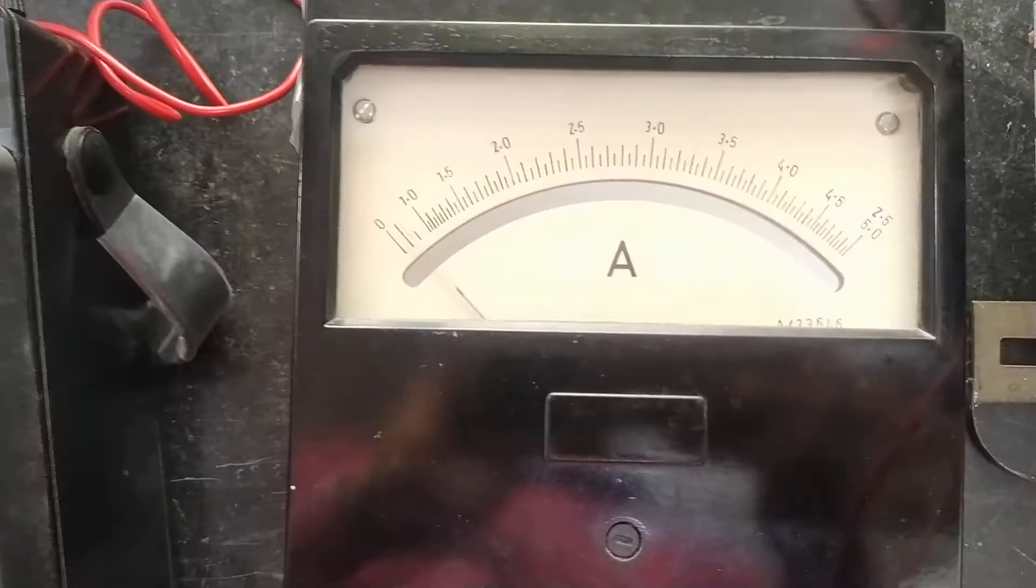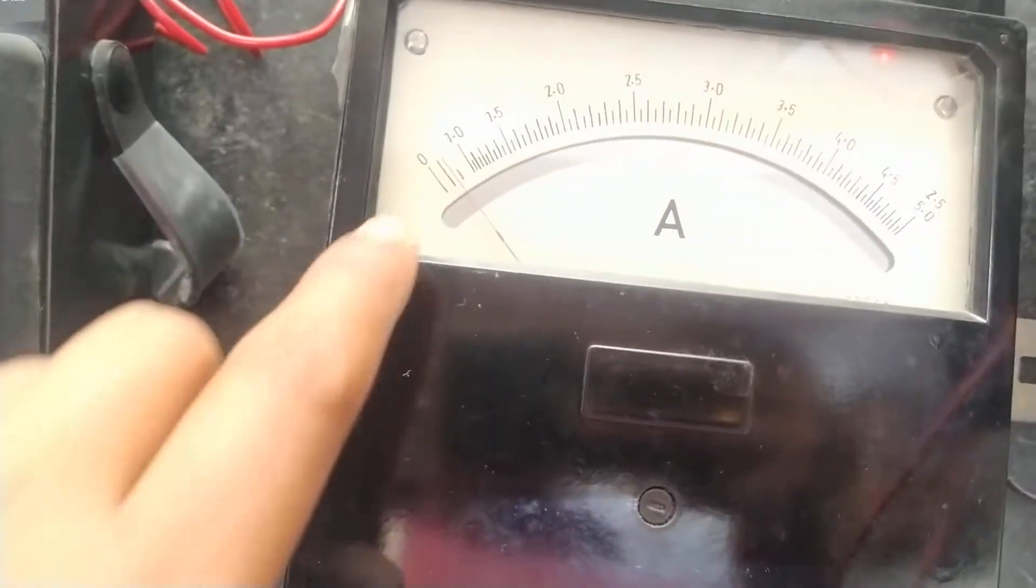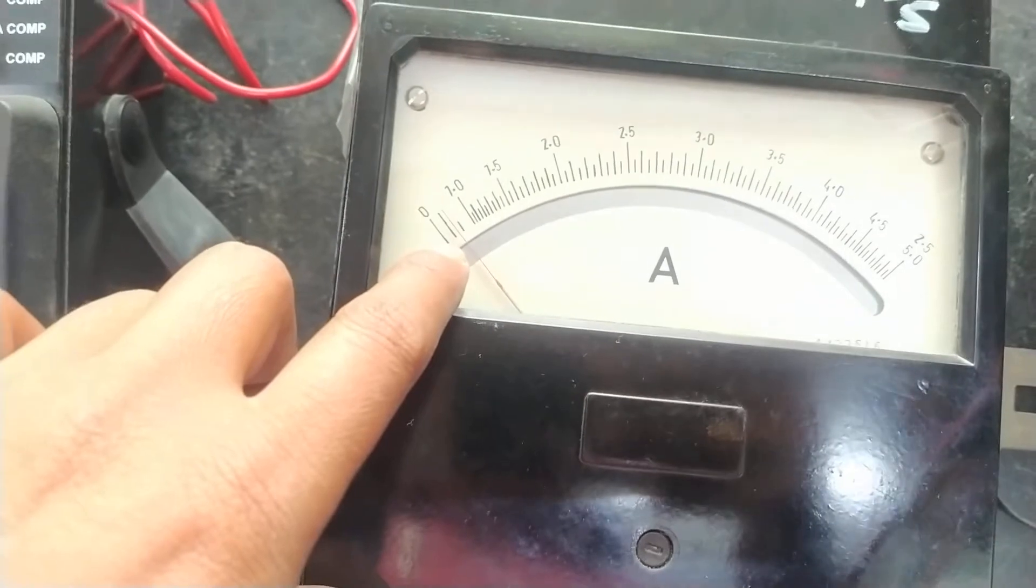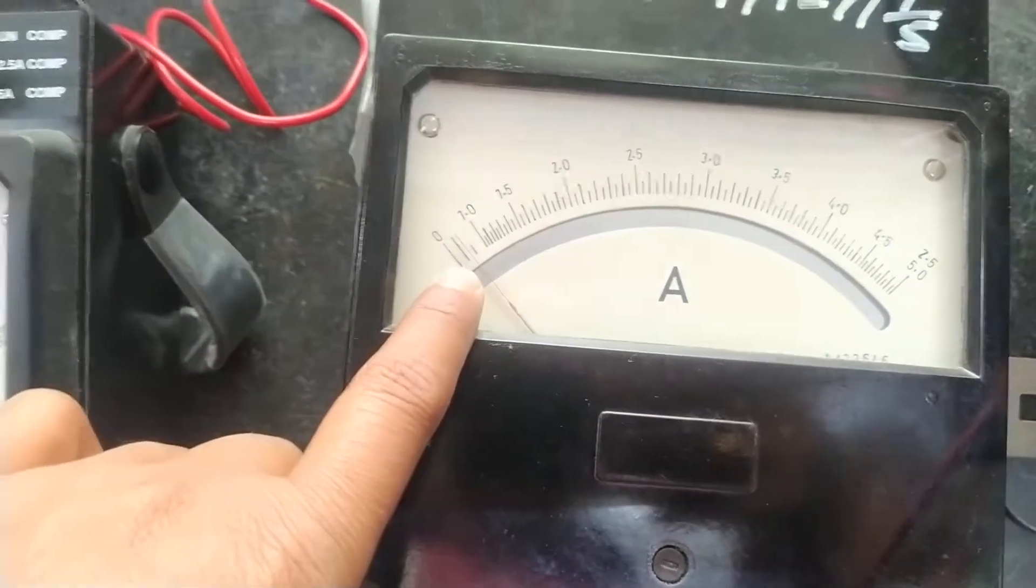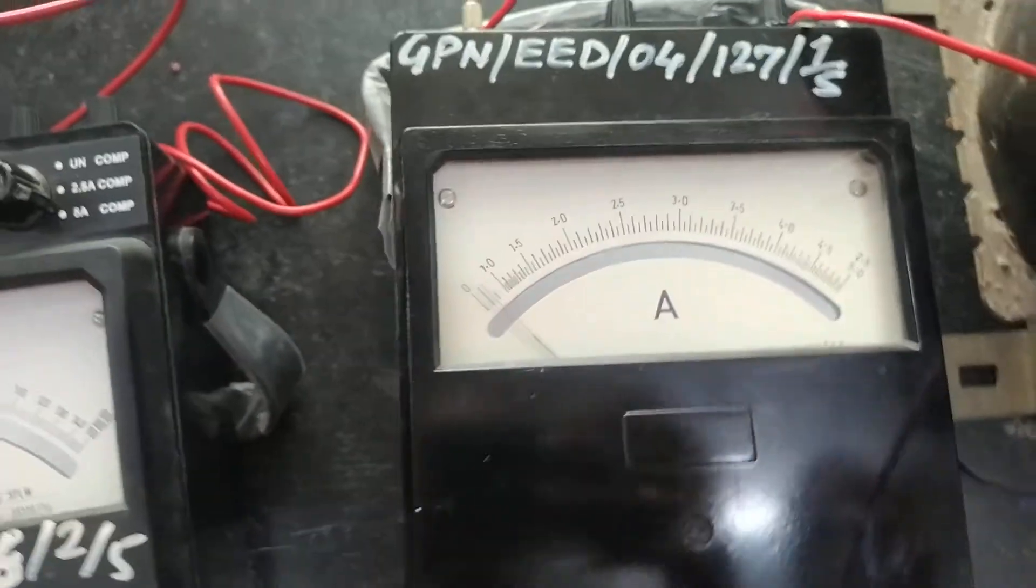Current, so primary current is slightly more than 0.25, so you can take it 0.3 ampere. So these are the two readings, which you are supposed to take.